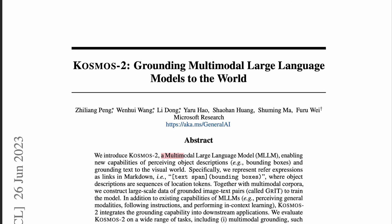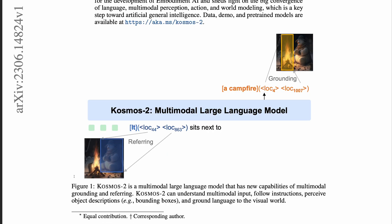Cosmos 2 is described as a multimodal large language model, or MLLM, enabling new capabilities of perceiving object descriptions — for example, bounding boxes — and grounding text to the visual world. It's a model that can take in a combination of an image and a text prompt that uses the term 'it' and links it to a specific region of the image containing a friendly looking snowman. So the prompt is 'it sits next to,' and from here the model performs a completion that includes both the relevant text — a campfire — and its location in the image as a bounding box. You can immediately see that this is a very general and flexible formulation that allows the model to point to things in images.